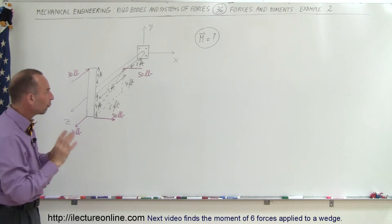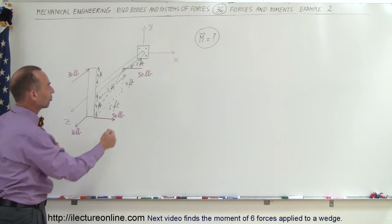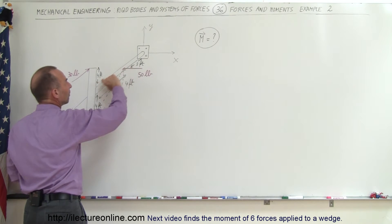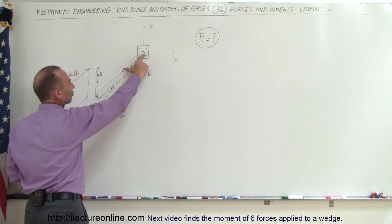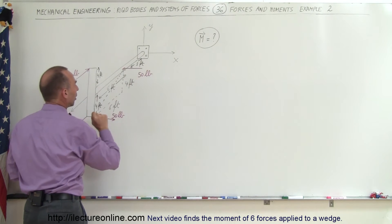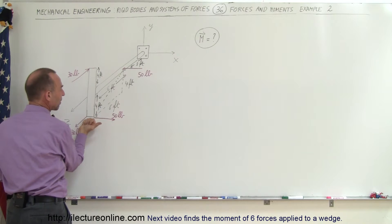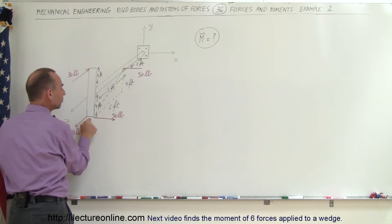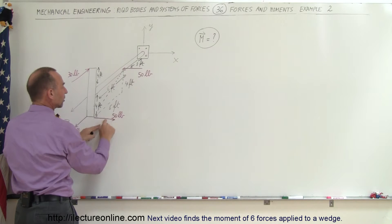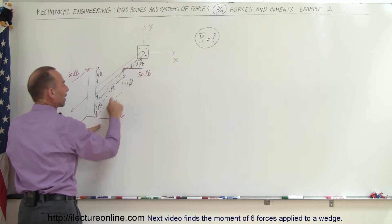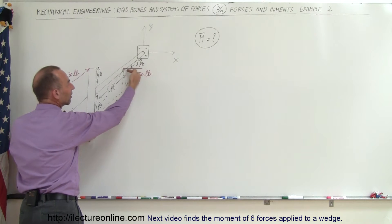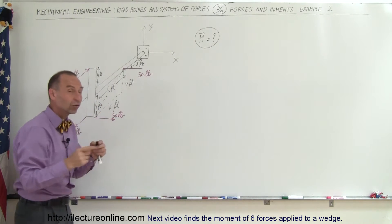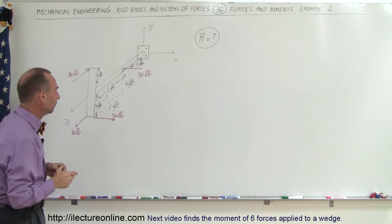Notice there are four forces acting on the structure. There's a 50 pound force pushing against the pipe here, which is three feet away from the wall. There's a second 50 pound force acting at the bottom of this beam, notice in the opposite direction. So this is in the negative x direction and this is the positive x direction, so those two forces make a couple.